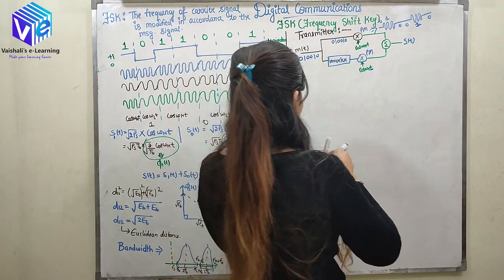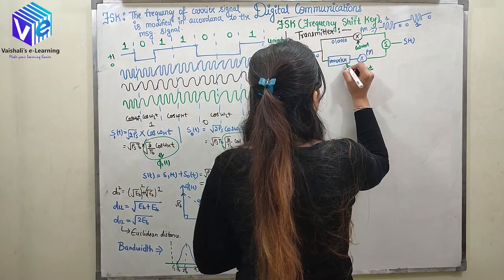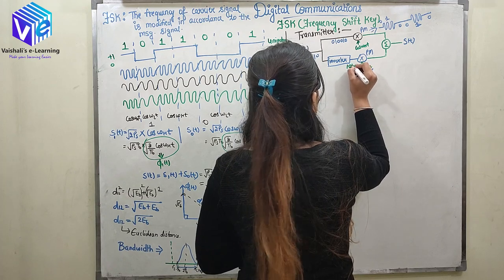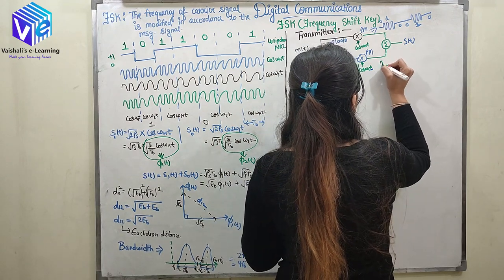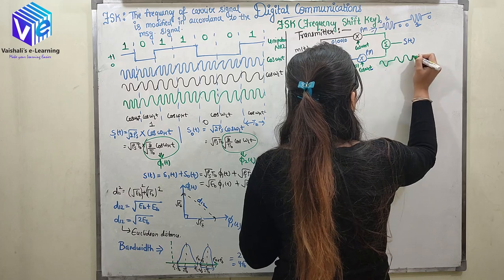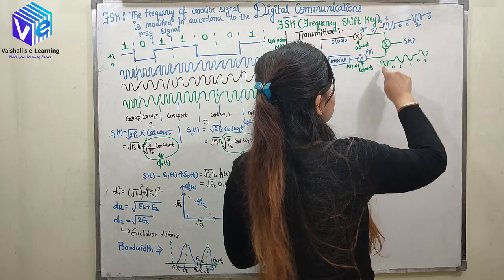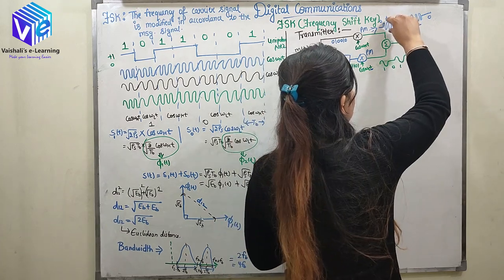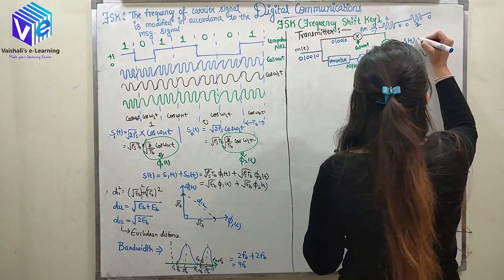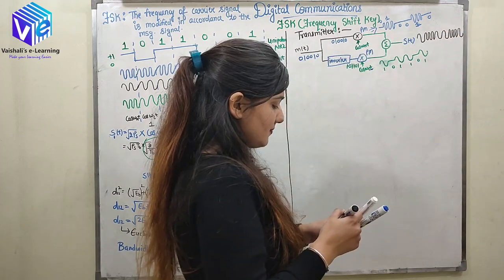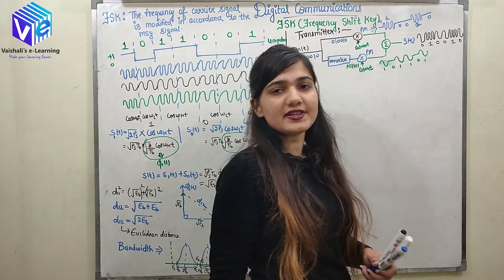On the lower branch, the message signal passes through an inverter where 1 is converted to 0 and 0 is converted to 1. The inverted signal is then multiplied by the low frequency carrier cos(ω_L * t). When these two branches are combined: wherever the upper branch has a high frequency signal and the lower has 0 — and vice versa — the combined output gives the FSK modulated signal, confirming the block diagram works in accordance with the FSK modulation scheme.